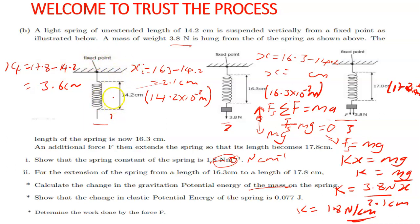The other question is saying, show that the change in elastic potential energy of the spring is 0.077 joules.